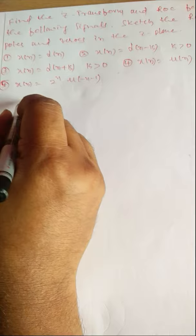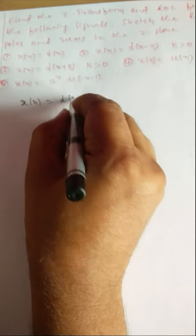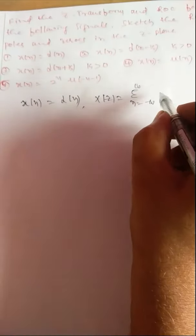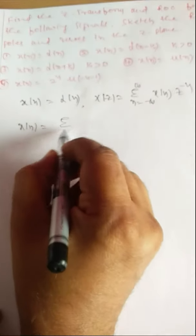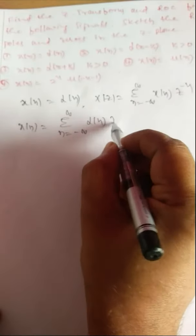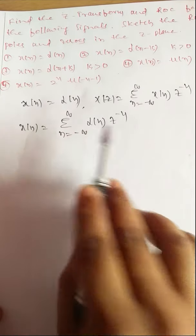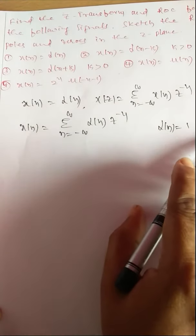The first problem is X(n) = δ(n). We know that the definition of Z-transform is X(z) = summation from n = -∞ to +∞ of X(n) · Z^(-n). Replacing X(n) with δ(n), we get summation from n = -∞ to +∞ of δ(n) · Z^(-n). Here δ(n) is the impulse function. Its definition is δ(n) = 1 when n = 0; it exists only at n = 0.